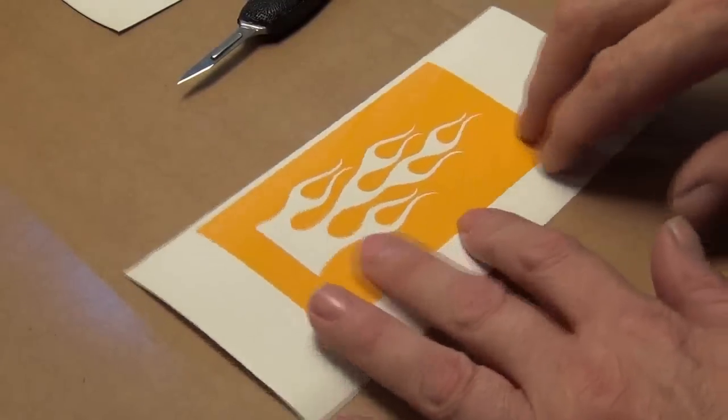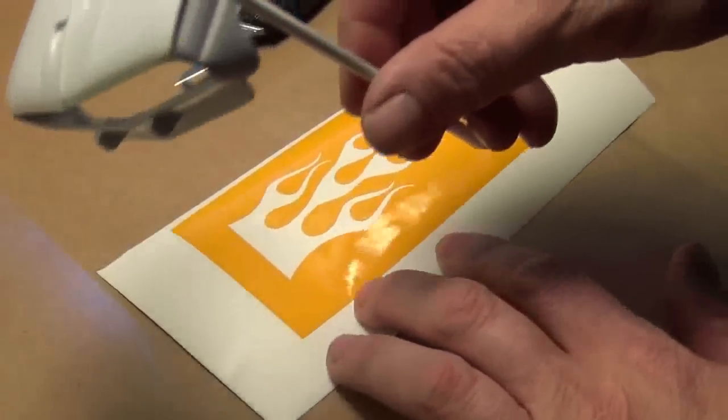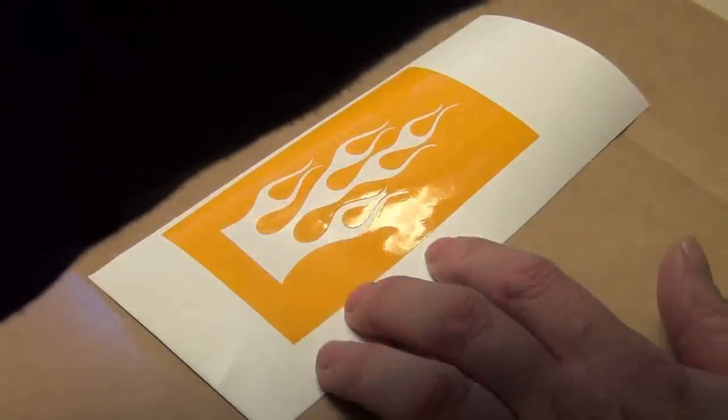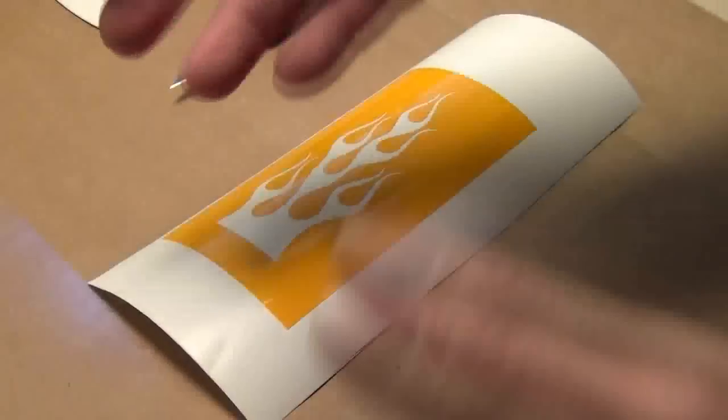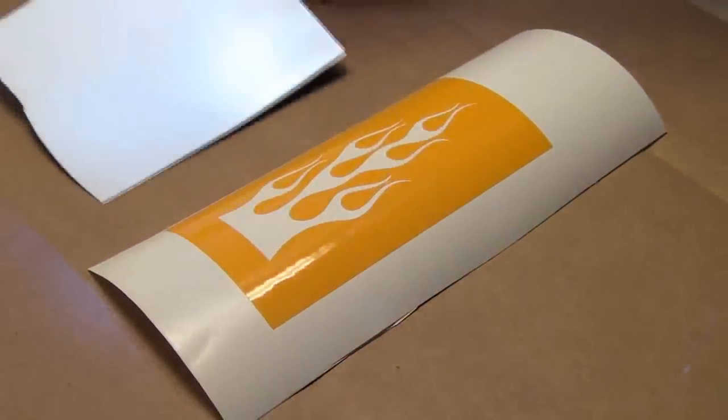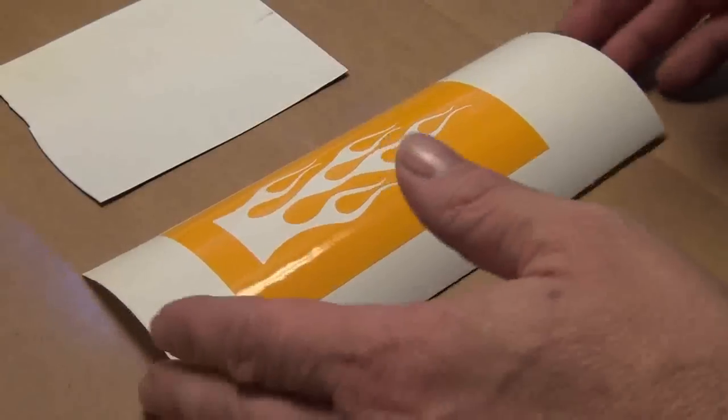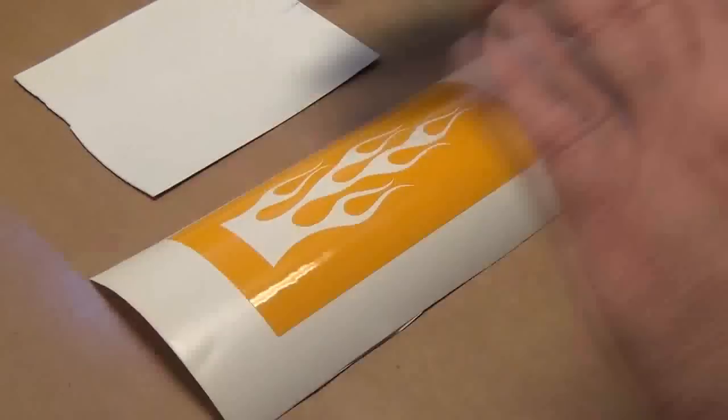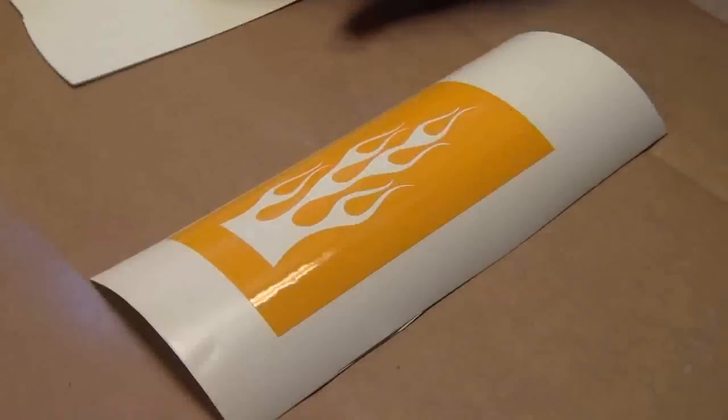Obviously, if I was putting it on the hood of the car or whatever, I would draw the flame out, print it on paper, and keep adjusting and stretching until it fit the way I wanted it on the model. In this case, I'm just doing this little sample piece, just a simple flame. That's not important. I'll talk about masking and flames in another video.